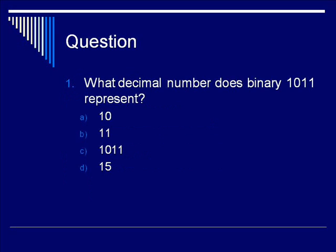Let's pause for a question. What decimal number does the binary number 1011 represent? Is it A, ten; B, eleven; C, 1011; or D, fifteen? You may pause the lecture to decide on an answer. The answer is eleven. Recall that the box on the far right is ones, next is twos, then fours, then eights. So here we have eight plus two plus one, which equals eleven.